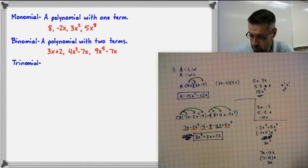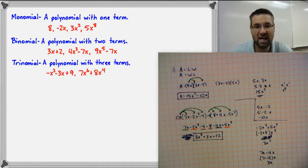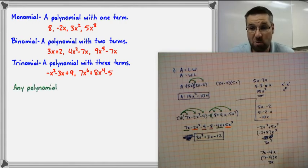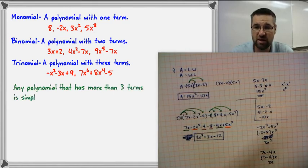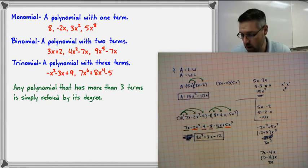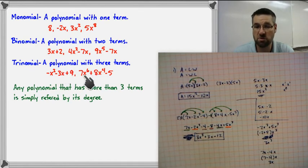A trinomial is a polynomial with three terms. Examples: negative x squared minus 3x plus 9, or 7x to the 6th plus 8x to the 4th minus 5. Notice there are three terms being added or subtracted. Anything greater than a trinomial doesn't have a specific common name — we just name it by its degree. For example, this trinomial is a 6th degree polynomial, or more specifically, a 6th degree trinomial.